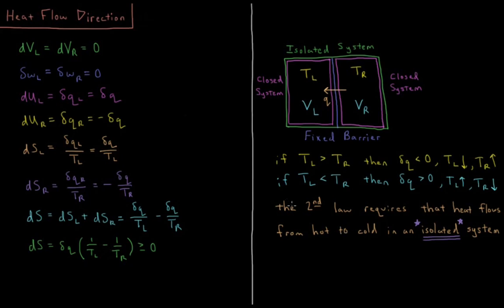According to our analysis of the entropy of these two systems, the second law requires that heat flows from hot to cold in an isolated system. Note that this applies only to isolated systems — it does not apply to closed or open systems. Most systems in the universe are open systems, but for the strong restriction of isolated systems, it is required by the second law that heat flows from hot to cold.